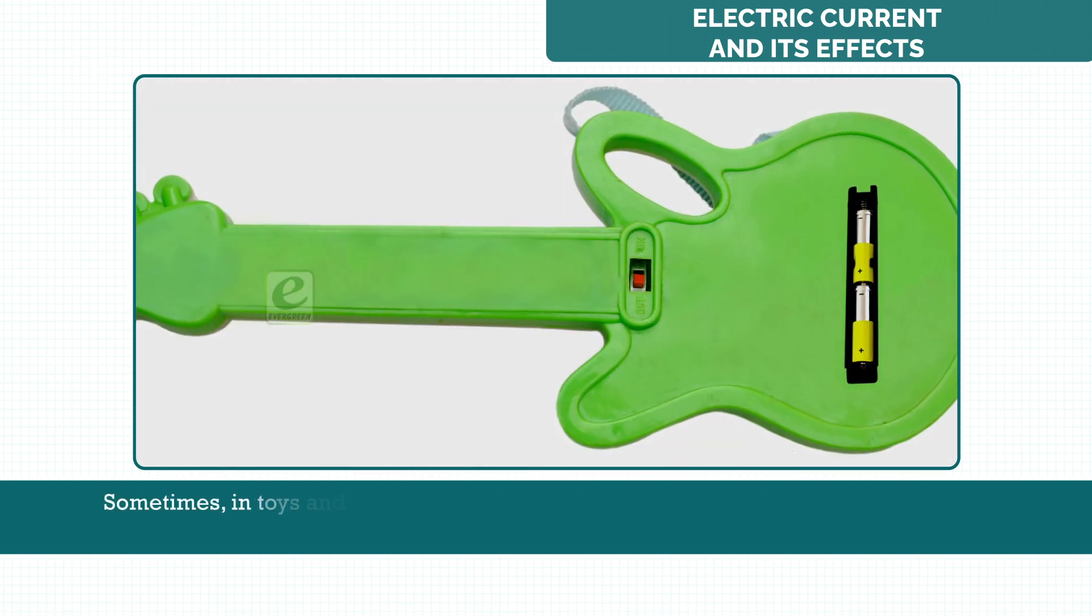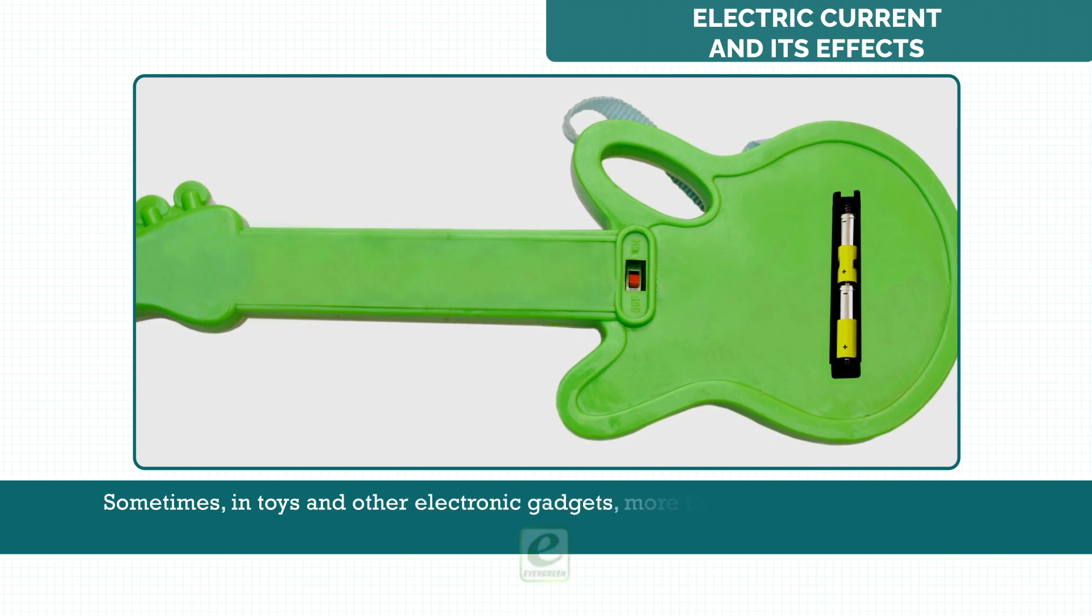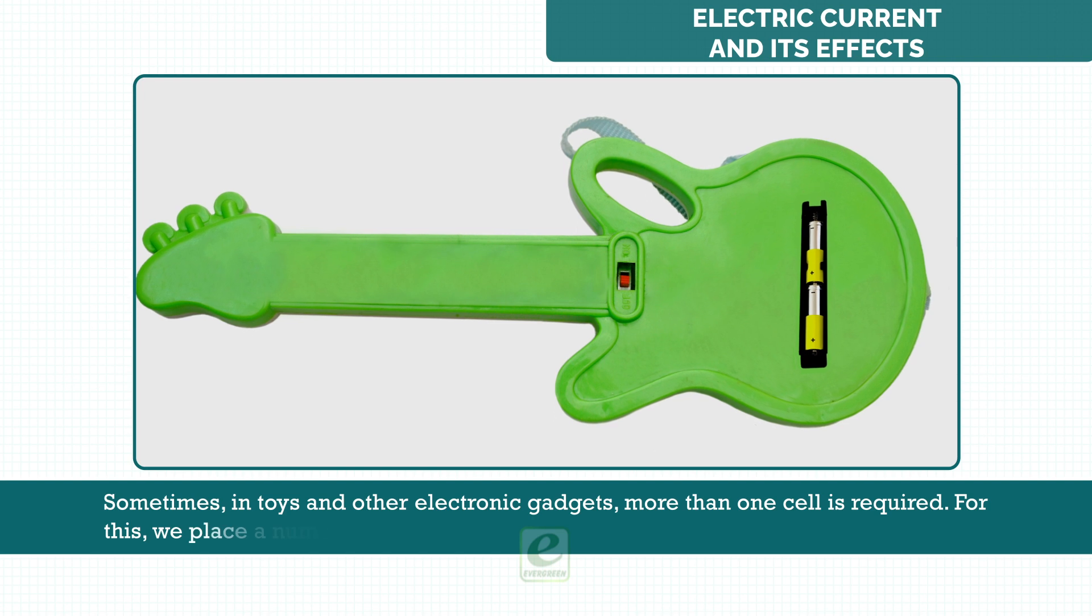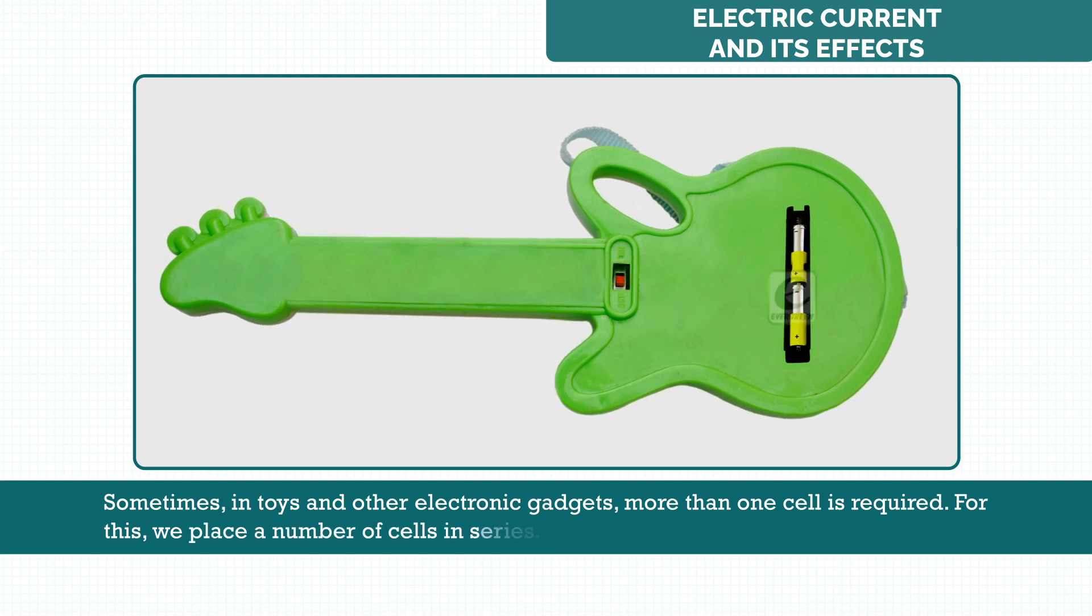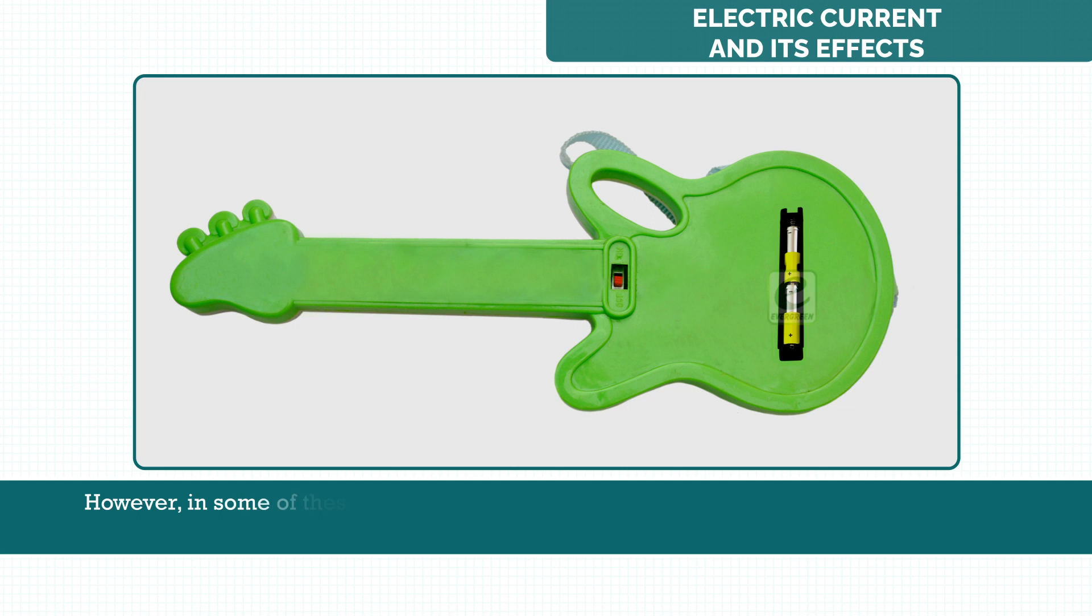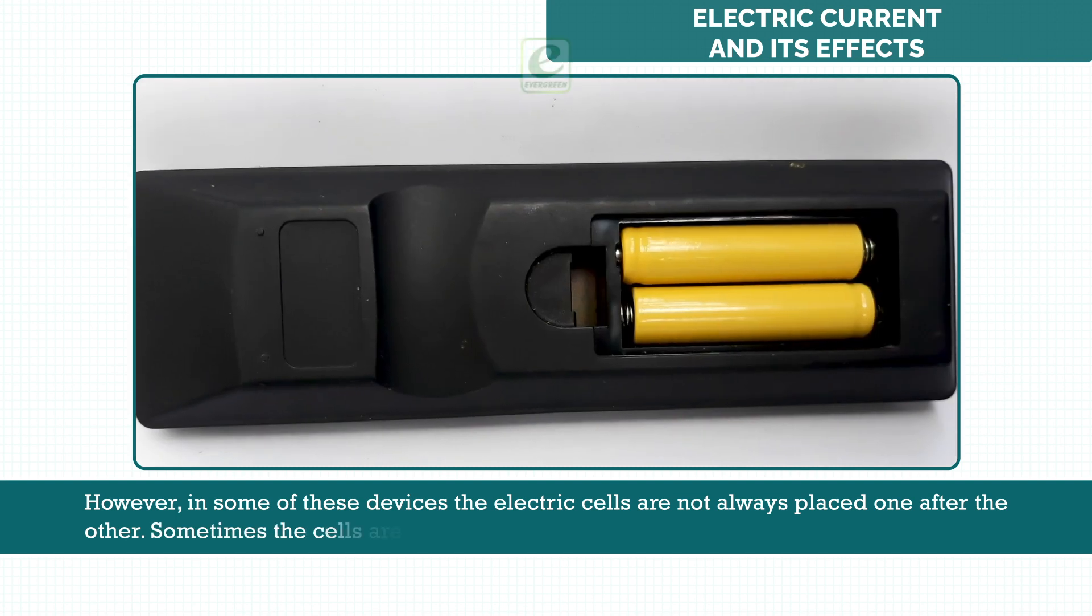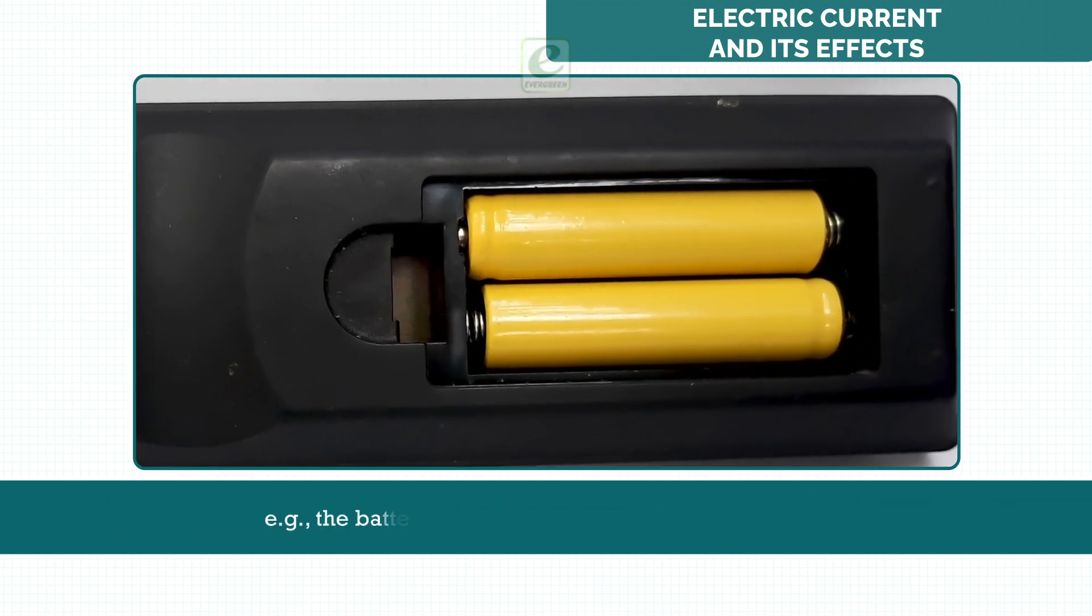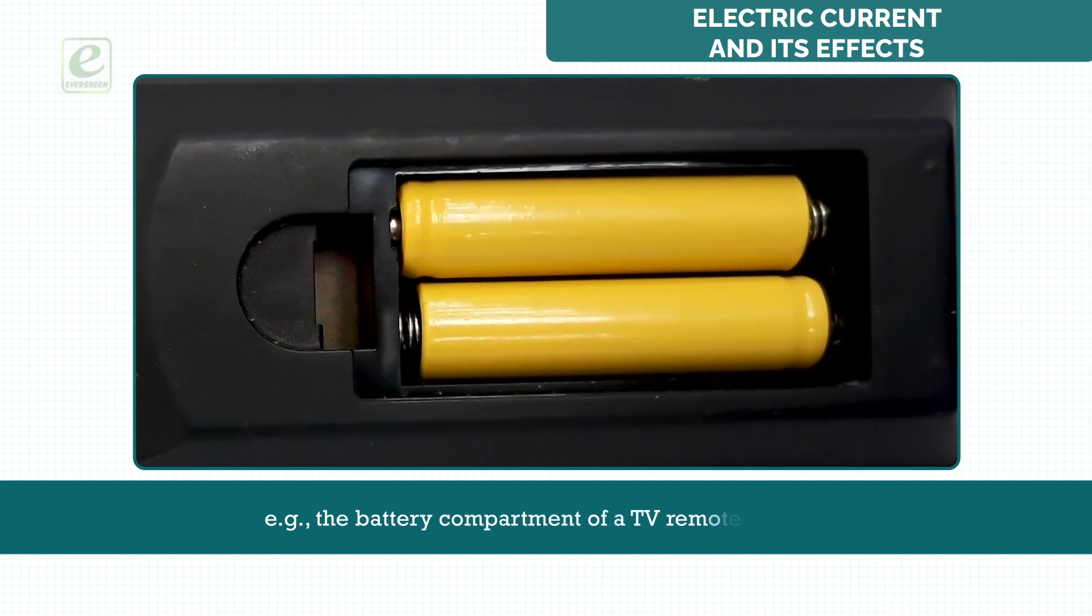Sometimes in toys and other electronic gadgets, more than one cell is required. For this, we place a number of cells in series. However, in some of these devices, the electric cells are not always placed one after the other. Sometimes, the cells are placed side by side, for example, the battery compartment of a TV remote control.